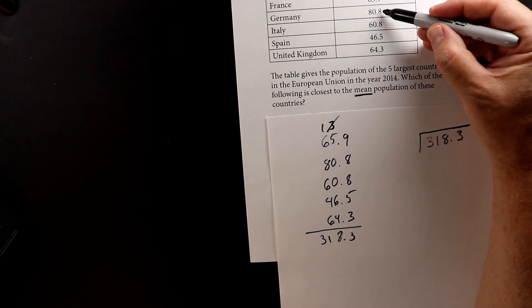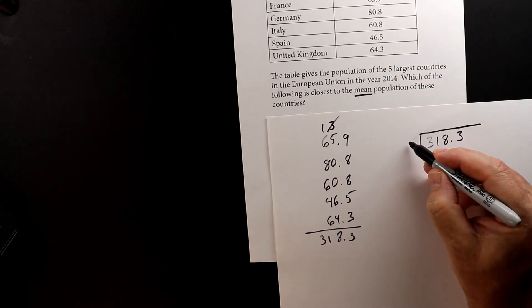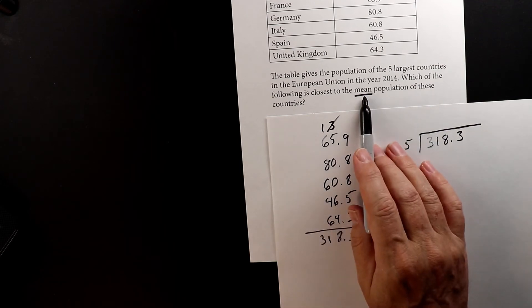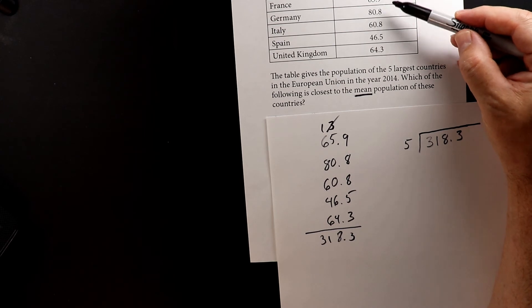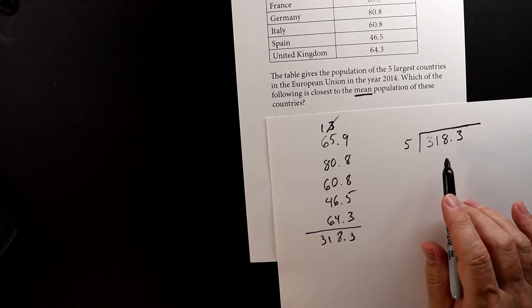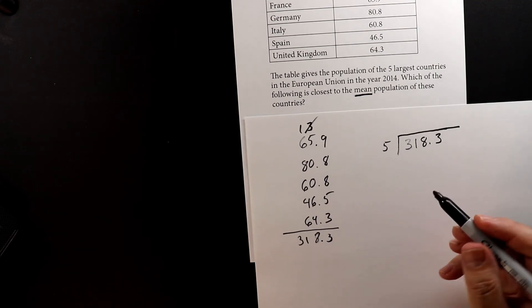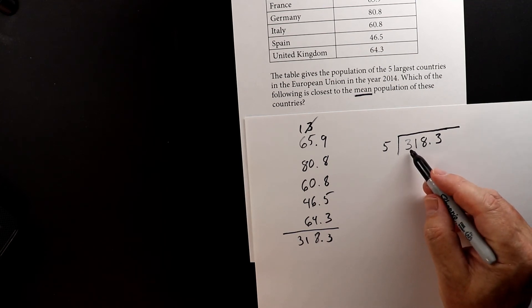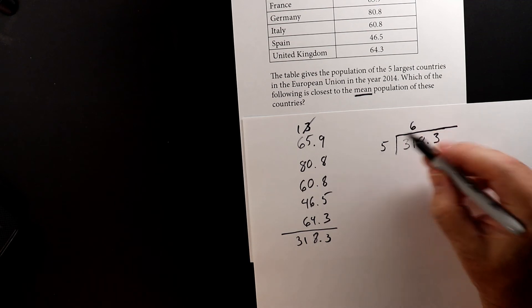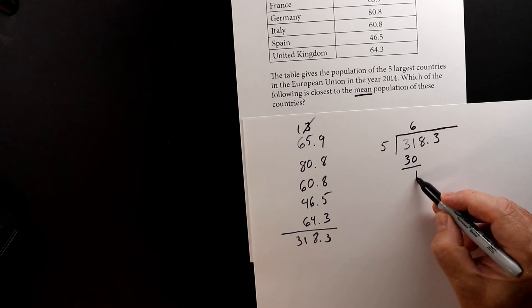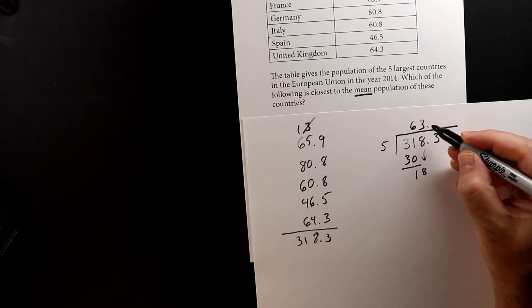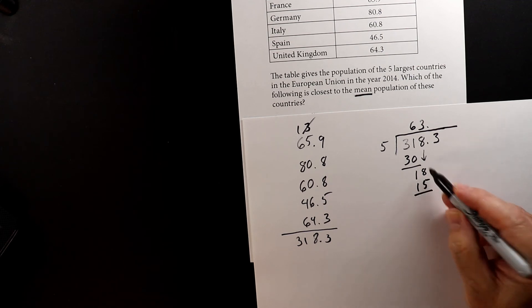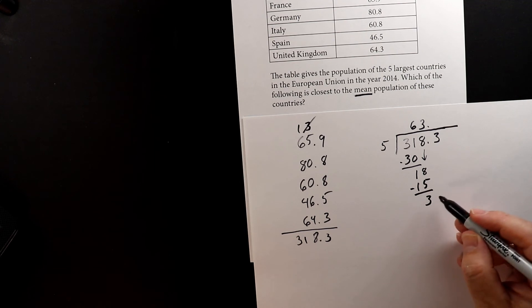So let's do the division. 318.3. Now we have 1, 2, 3, 4, 5. So we have to divide this number by 5 to find the mean. So to find the average, you add up all the elements, and then you divide it by the number of elements. So we have 318, so 3 is too small, so we move over 1. So 31 goes into 5, 6 times. 6 times 5 is 30. 31 minus 30 is 1 left over, and then I bring down the 8. 5 goes into 18 three times. 3 times 5 is 15. 18 minus 15 is 3. Now I bring down the 3.